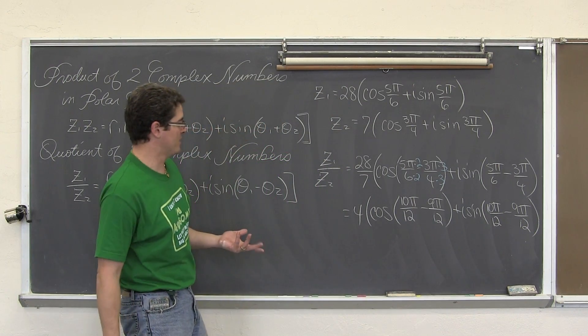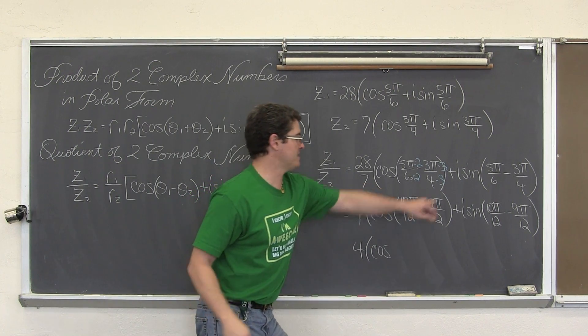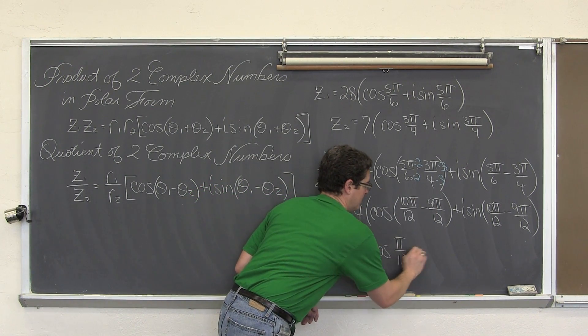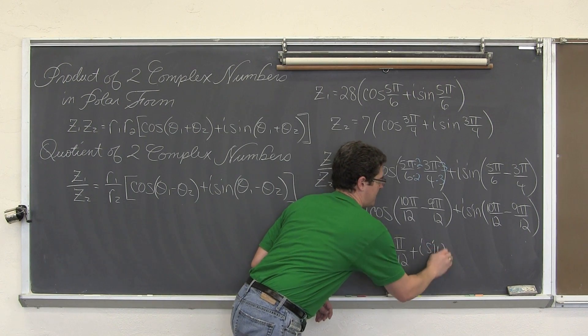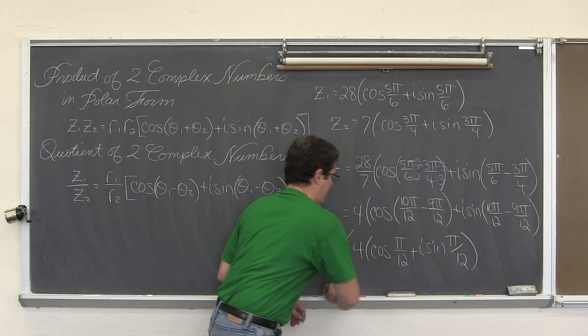Our final answer is 4 times the quantity cosine π/12 plus i sine π/12.